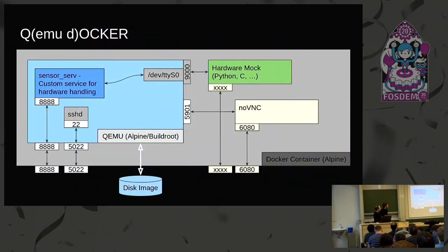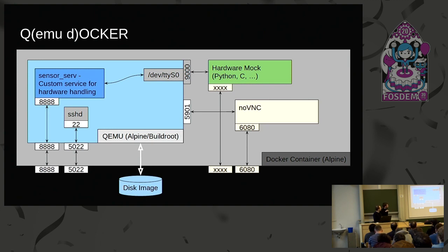This is what the container looks like. It's not exactly what we use on the project but it reflects the state of the composition. The outer container is Alpine with QEMU installed. Inside QEMU runs and gets the disk image via a volume mount. Some ports are exposed — for example SSH to remotely control it. In the future we'd like to get rid of that and do everything via AMQP commands. AMQP is basically the protocol used by RabbitMQ, our message broker middleware.